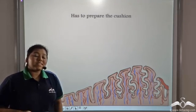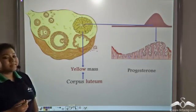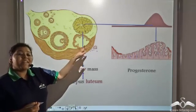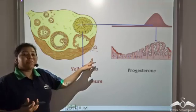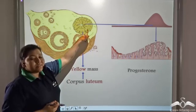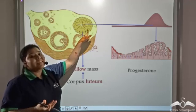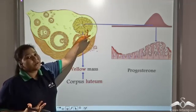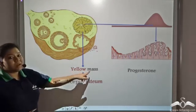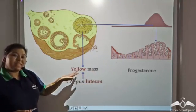Who secretes the hormone progesterone? The Graafian follicle matures and finally ruptures on the fourteenth day. The remnant of this Graafian follicle is known as the corpus luteum — it is an endocrine tissue, and since it is endocrine in nature, it releases the hormone progesterone. Corpus luteum means a yellow mass: corpus means mass and luteum means yellow.